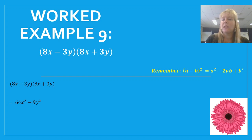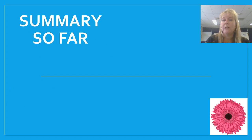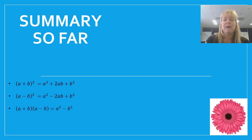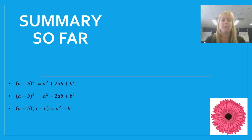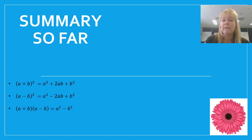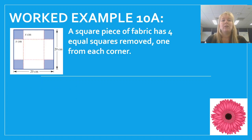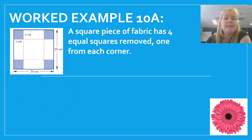Let's look at a concrete real-life example, but first a quick summary. These are our three rules: the two perfect square rules and the DOPS rule. You might want to take a moment to write this down.